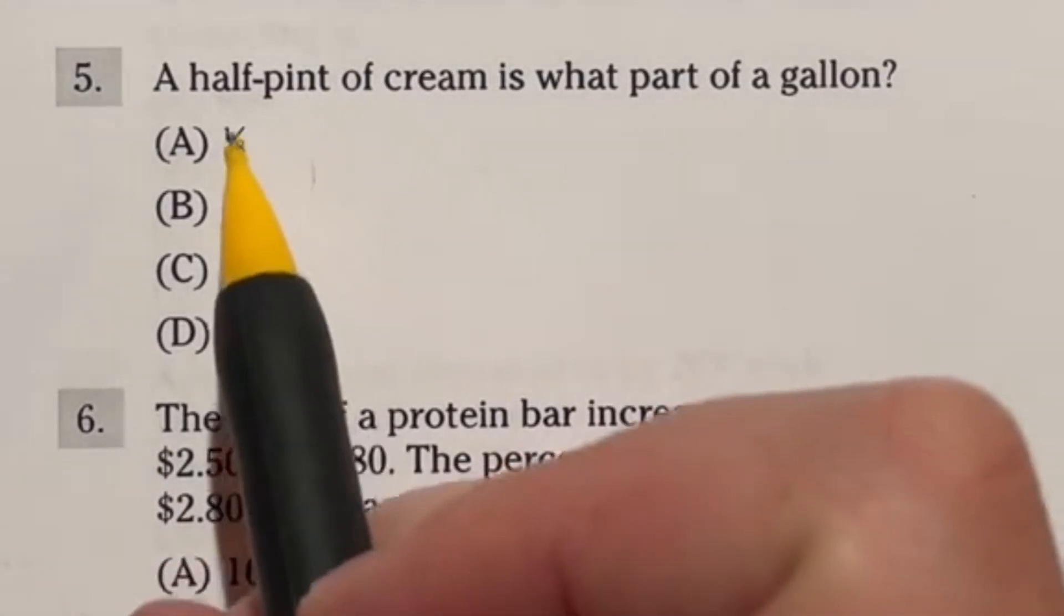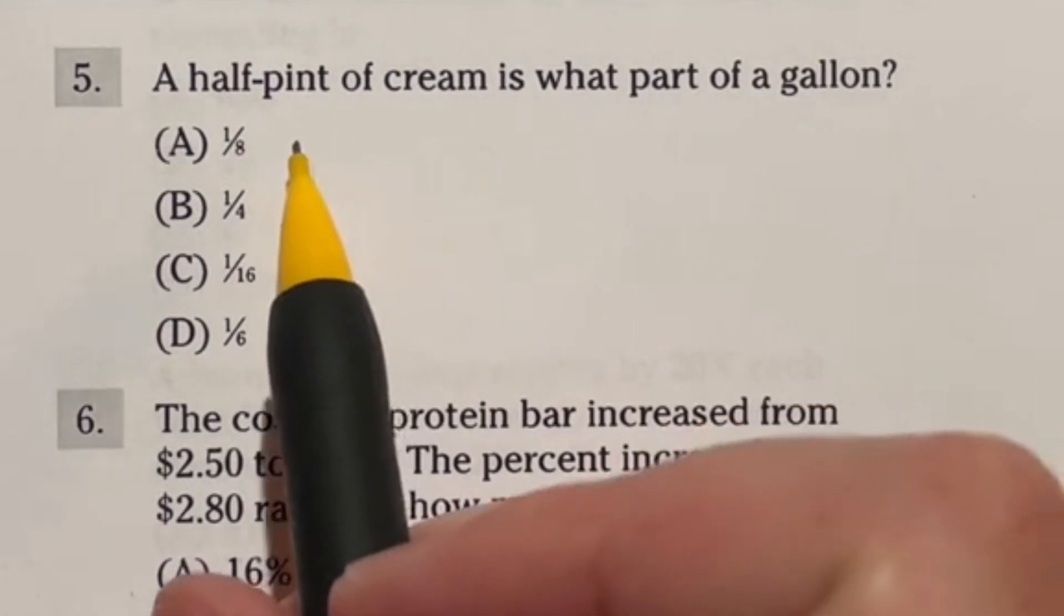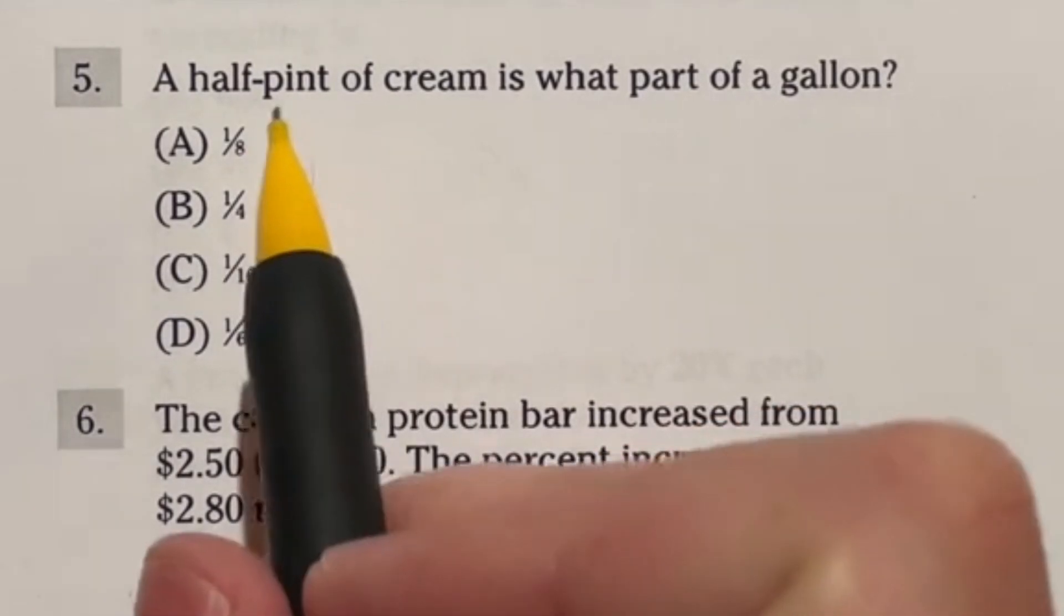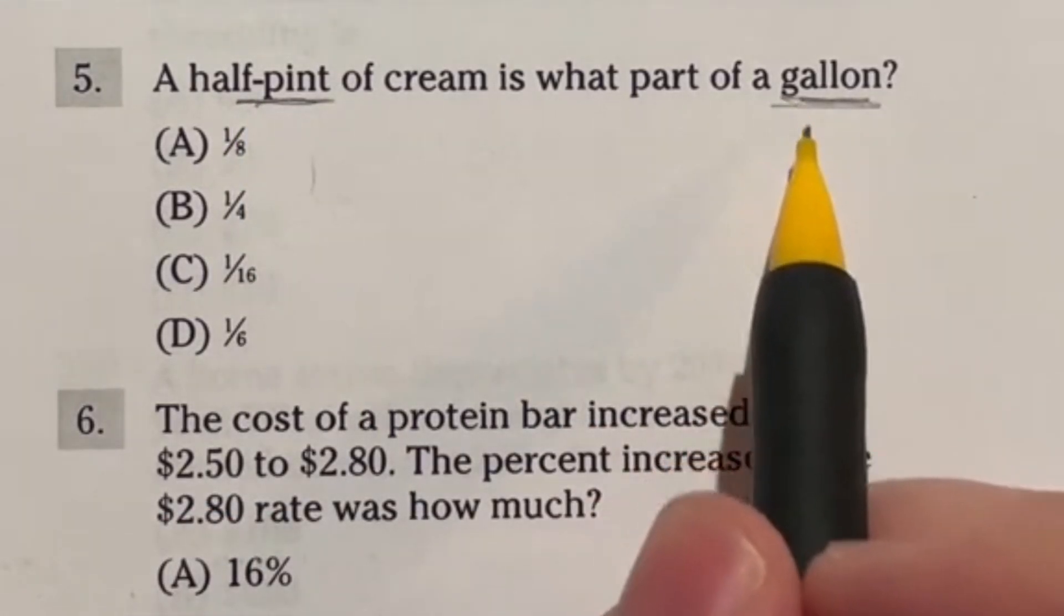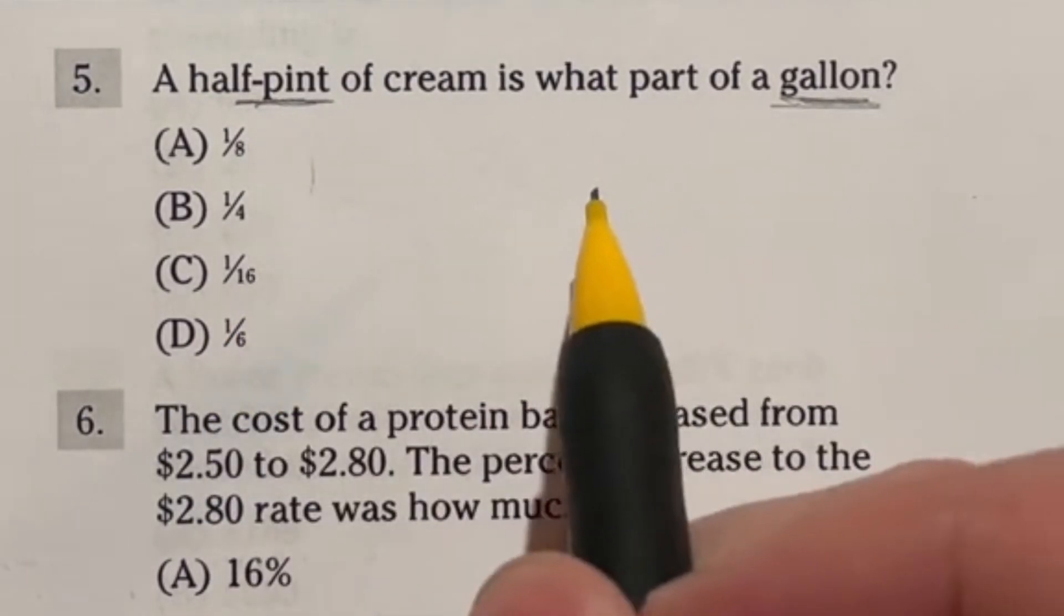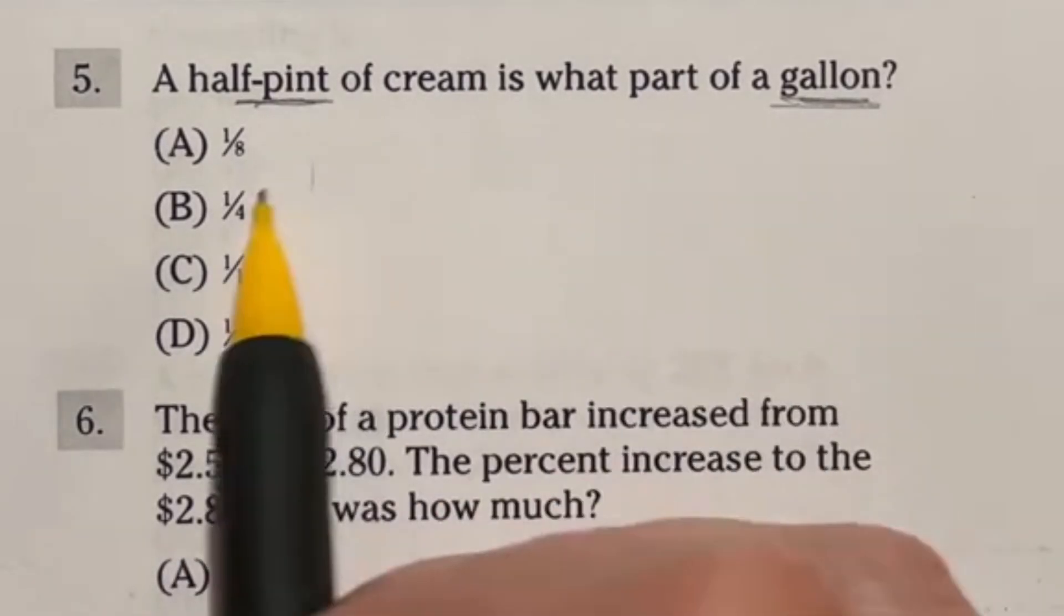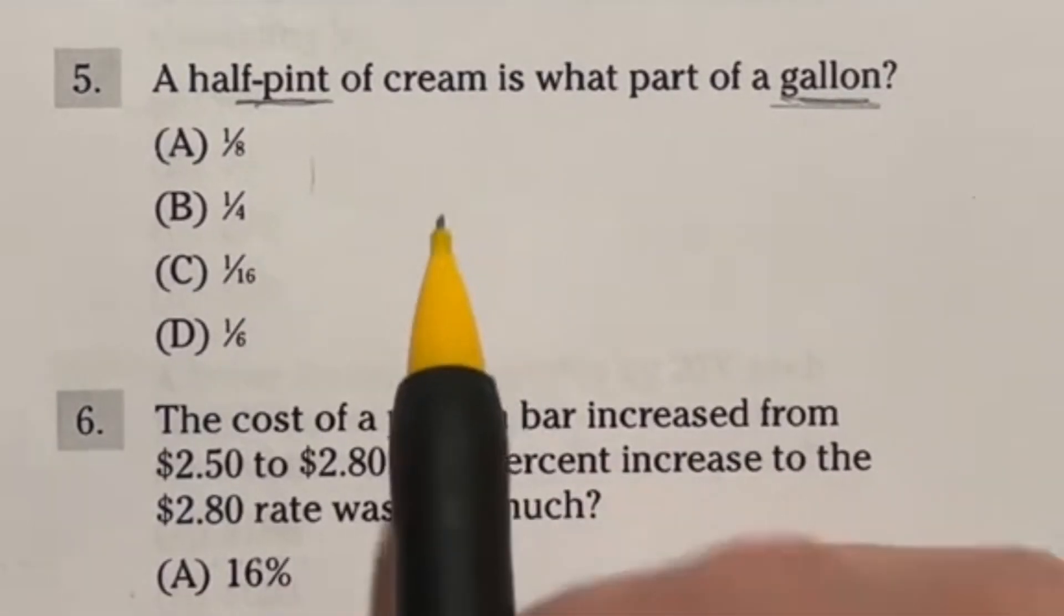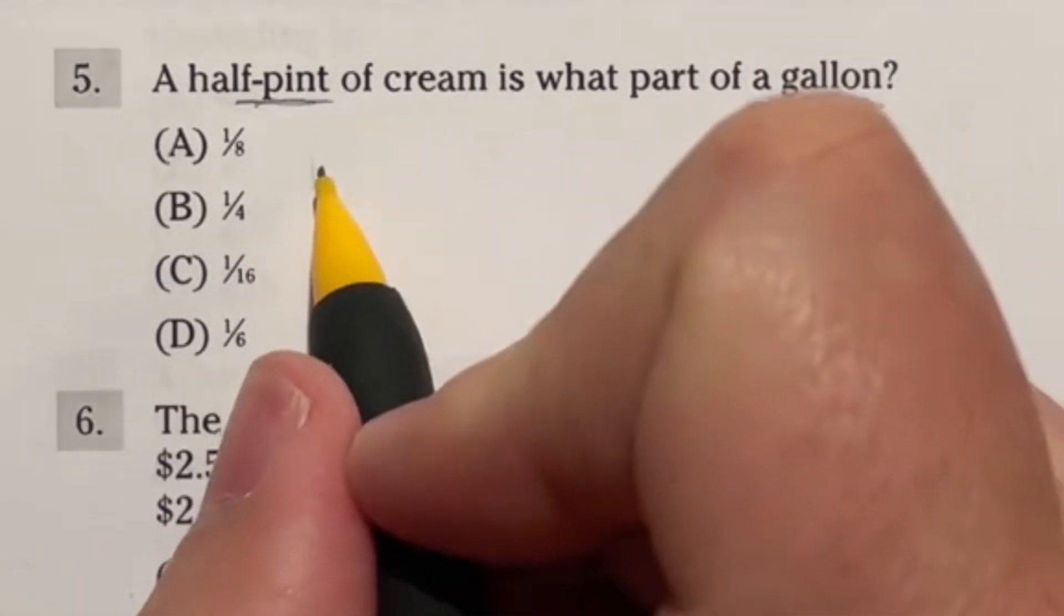Number five on the ASVAB says a half pint of cream is what part of a gallon? Again the issue with this guy is going to be the fact that you don't know the conversion rate between a pint and a gallon and you can't google it because on the ASVAB you're not allowed to use your phone you're also not allowed to use a calculator. So how would you go about doing this? This is one of those facts that you just need to know if you are taking the ASVAB to get into the military. So in this case let's just go ahead and start off there.